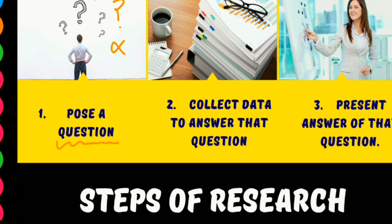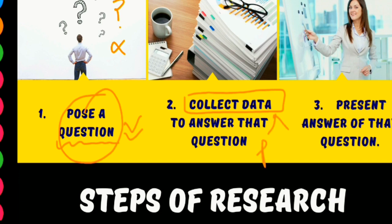So before research, a question must be there in your mind. Then the second step — we collect data related to that question. There are two sources for data collection: primary source and secondary source. After collecting the data, we analyze that data, and after analysis we find out the answer to our question and present it.